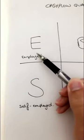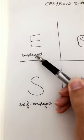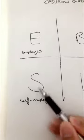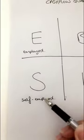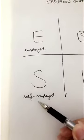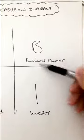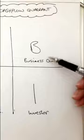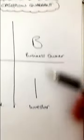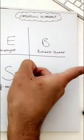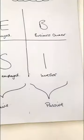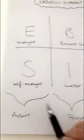E stands for employment — being employed, going and getting a job. S stands for self-employment — building a job around you and being the worker. B stands for business owner — this is where you get people to do the work for you. I stands for investor. This side is the wealthy people. This is passive income. This is active income.